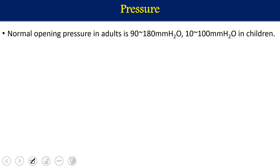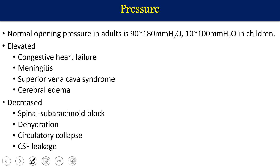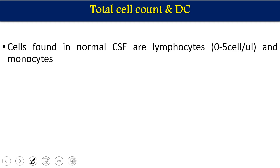Normal opening CSF pressure in adults is 90–180 mm of mercury. Pressure can be elevated in cases of congestive heart failure, meningitis, superior vena cava syndrome, or cerebral edema. Pressure decreases in spinal subarachnoid blockage, dehydration, no water intake, circulatory collapse, or CSF leakage — decreased pressure affects the normal flow of CSF.